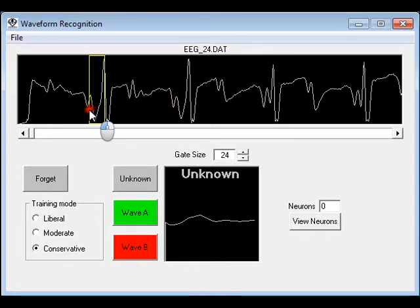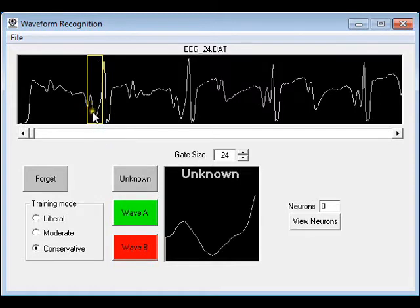I'm going to start by teaching an example of this dip here as a waveform type A. Instantaneously, we can see all the waveforms that the single neuron that was committed at this time recognize as a signal type A.